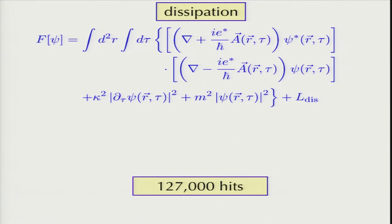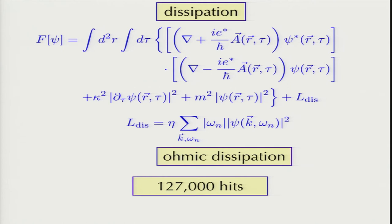In the mid-90s, with this collision-dominated machinery, we started applying it to all possible models in search of a Bose metal. The first thing you would do is add dissipation — ohmic dissipation — because that's what the smart people said. If you Google ohmic dissipation you get this model with a mod omega term, changing from z=1 dynamics to z=2 dynamics. Many people worked on this model, including Rosario Fazio.